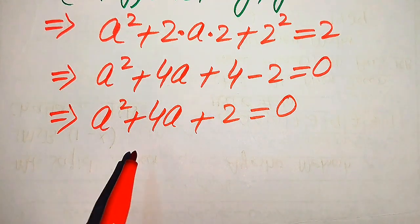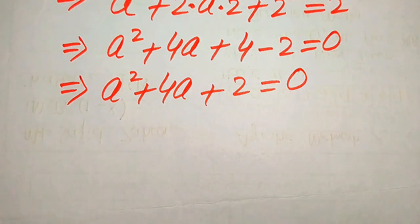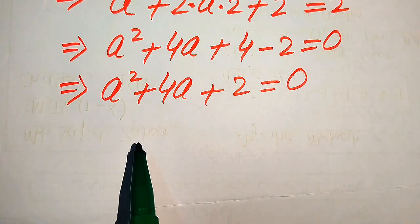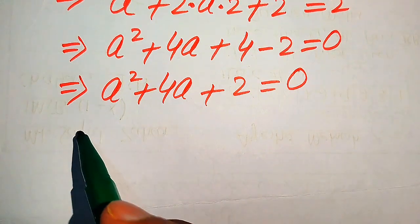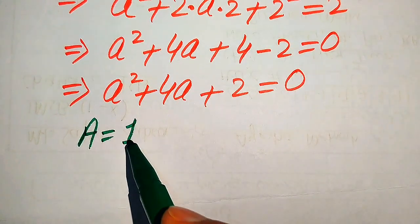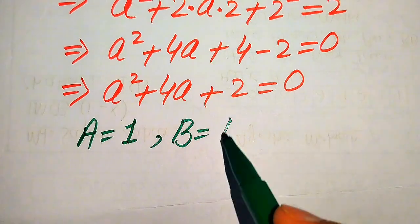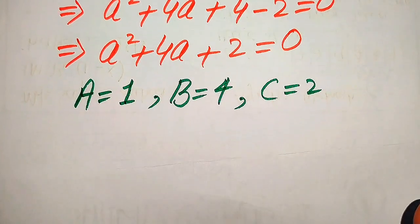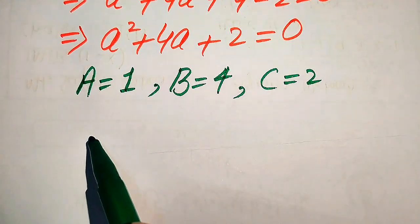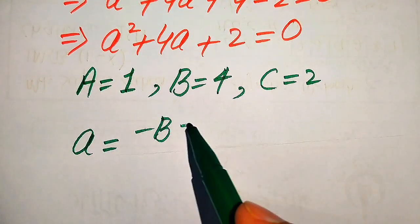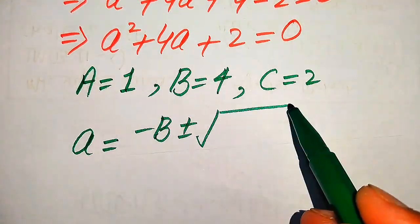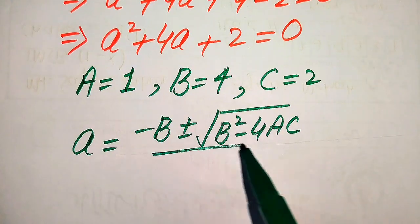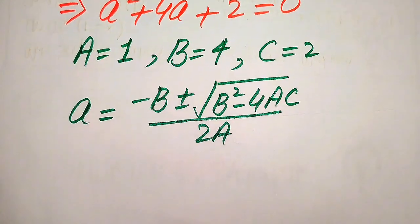Simplifying, we get a² + 4a + 2 = 0. Our equation is now quadratic in the variable a, so we use the quadratic formula. The coefficients are: a = 1, b = 4, and c = 2. The quadratic formula states: a = (−b ± √(b² − 4ac)) / (2a).